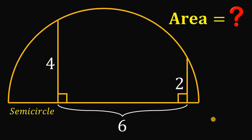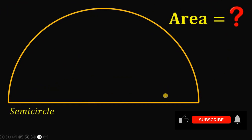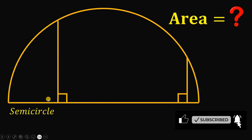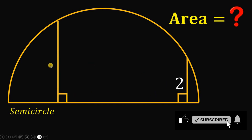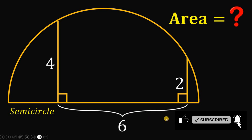Can you solve this geometry challenge? Here's the question. Given this semicircle, let's draw some segments like this, which is perpendicular to the diameter of this semicircle. The length of this segment must be equal to 2 units, and the length of this segment must be equal to 4 units. The distance between these two segments must be equal to 6 units. The question is: what is the area of this semicircle?